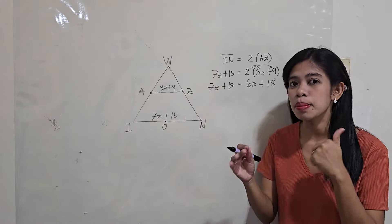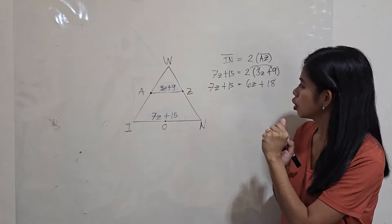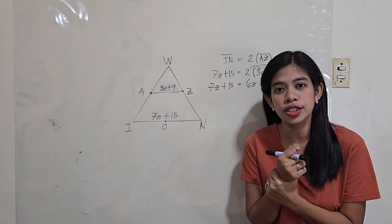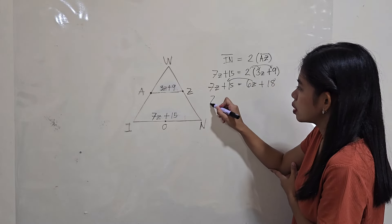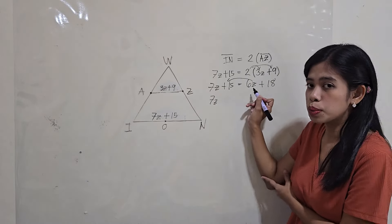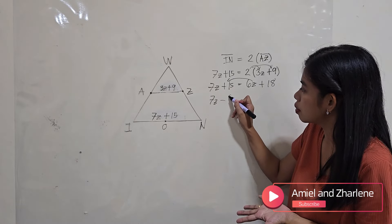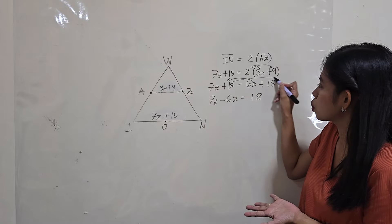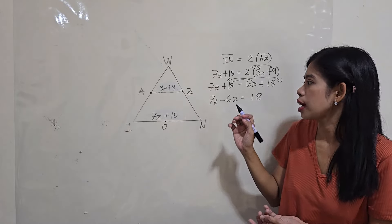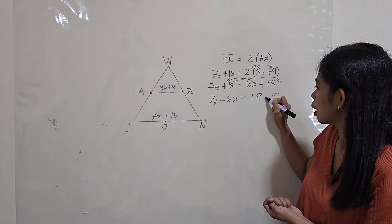After that, let's combine the like terms. Let's move to the left side the terms with literal coefficients, or those with letters. So, we have here 7z. Transposed to the left side, 6z will become negative 6z. Equals, we have 18 here on the right side. Let's transpose the constant term on the right side. So, positive 15 will become negative 15.